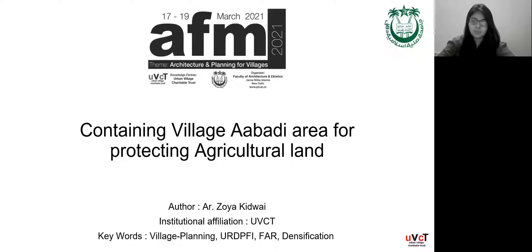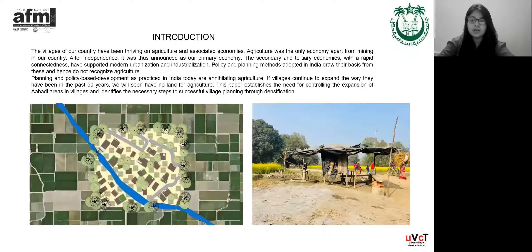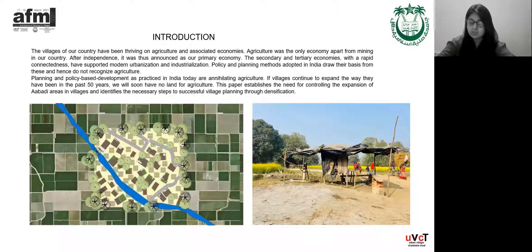The connection between containing the village abadi area and agricultural land can be understood as follows. In basic planning of villages, the abadi area — that is the residential land — lies in the central part, and the agricultural land surrounds it. With time, when there is a need for more housing or expansion, the village grows outwards, and the agricultural land is eaten up, resulting in a reduction of agricultural land.